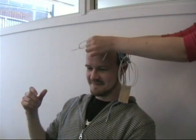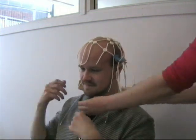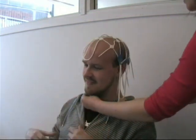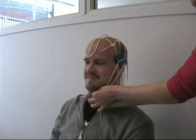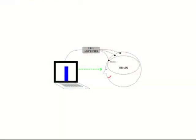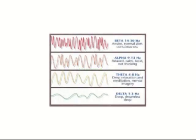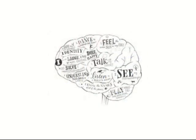Neurofeedback is a tool used to help people practice regulating their own brainwaves. The procedure consists of attaching electrodes on the outside of the scalp to detect electric activity from the brain. These signals are then amplified and analyzed by a computer program that gives continuous visual or auditive feedback to the person. Brainwaves of different frequencies can be associated with different stages of consciousness.